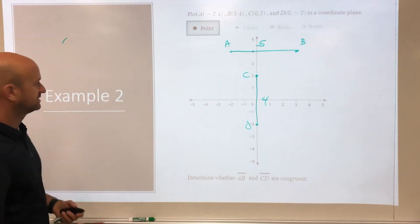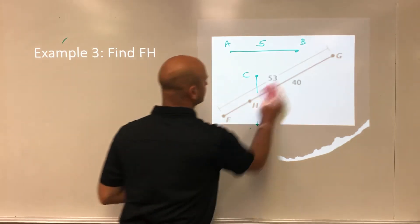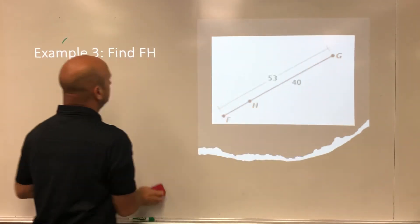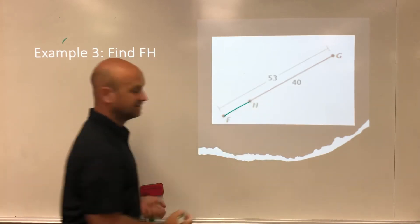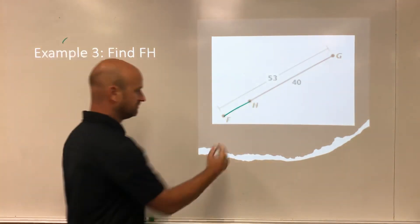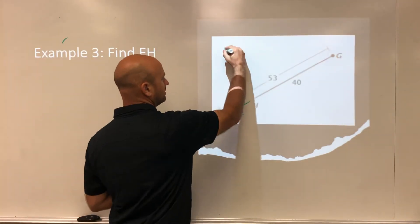A last example here: we want you to find FH. Well FH is this little part here, and that is a part. So if we want to find the part we take the whole thing minus the part, and that will give us the missing part.